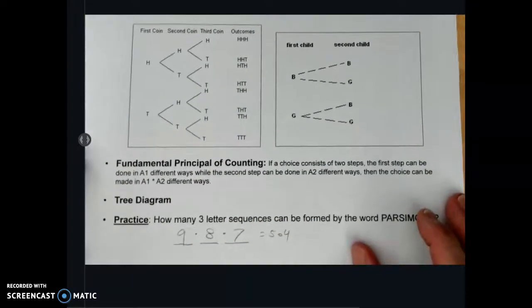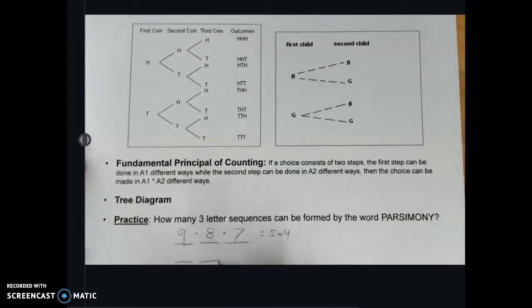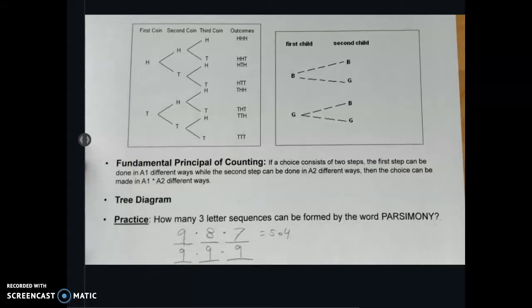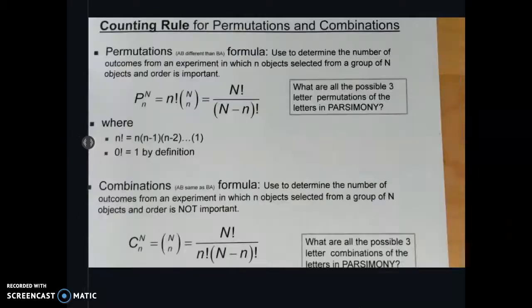If, in contrast, you're going to allow letters to be used more than once, then you would have nine for the first slot. But then you could have nine again for the second slot. And you could have nine again for the third slot. And if you take nine times nine times nine, or nine to the third, it's equal to 729.